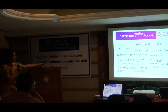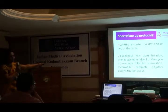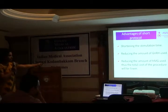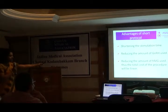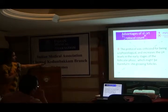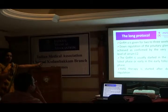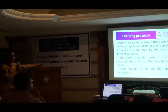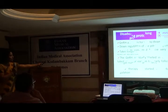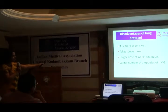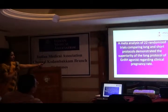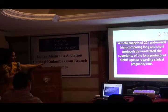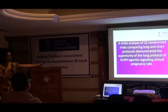In the agonist protocol, we use a down-regulation protocol. In the short protocol, we use a flare-up effect, and the advantage is a shorter period, reducing time for GnRH and reducing the amount of drug used. In the long protocol, when you keep giving GnRH agonists to a patient, she desensitizes — the pituitary doesn't respond, she is down-regulated, she becomes hypogonadotropic. Then you add exogenous gonadotropins. It is more expensive, takes longer, and requires larger doses, but pregnancy rates were really high. When we compared about 22 patients who went under the two different protocols, we found the superiority of the long protocol, which is considered the gold standard.